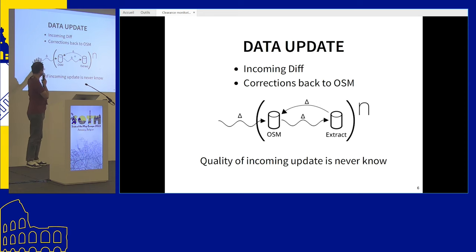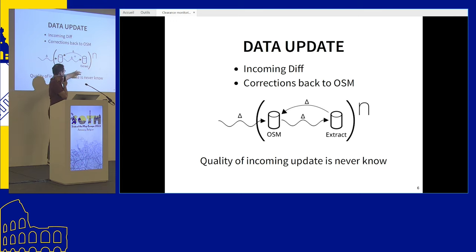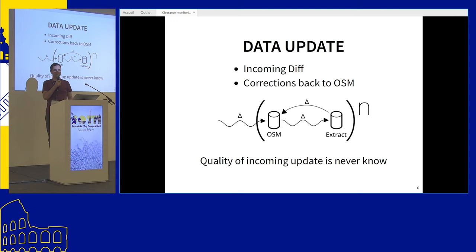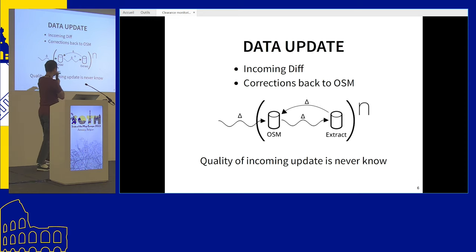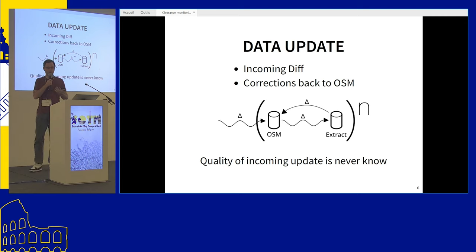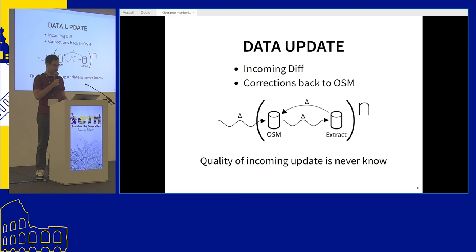We have OpenStreetMap and random contributions to it. We have a copy of OpenStreetMap as an extract, we update it with random contributions, and we try to fix the data to comply with some rules needed for our own usage — for example, validating defibrillators in a municipality. When something is wrong, you fix it in OSM, you get an update, but you get a random update and you're never sure of what you get in your copy.